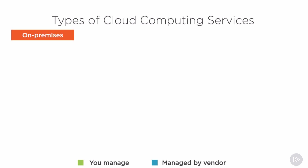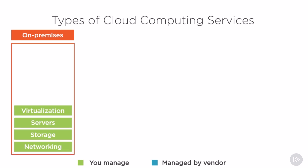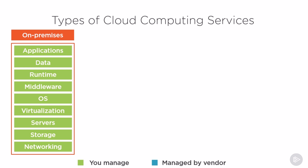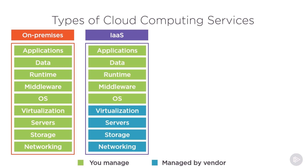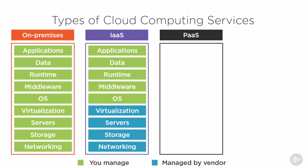Let's start with on-premises, where it's really easy — you're the one that manages everything from storage to the data center to networking, virtualization, and the applications on top of it. Infrastructure as a Service delivers cloud computing infrastructure to organizations, including things such as servers, networks, and storage. You as the client still manage the operating system, the applications, as well as the data.